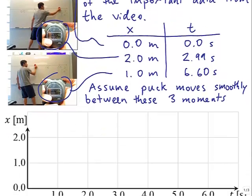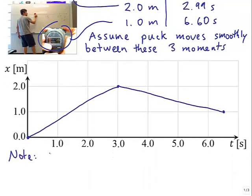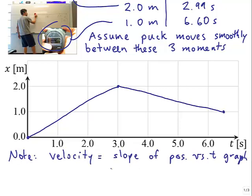So we can make a plot now and just connect the dots. So the first dot is 0, 0. Second dot is 2 and 3. And the third dot is 1 and 6.60 seconds. So that's the position versus time graph. And we note that the velocity is the slope of the position versus time graph.